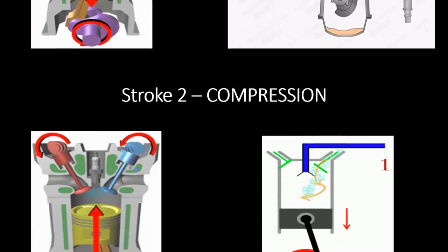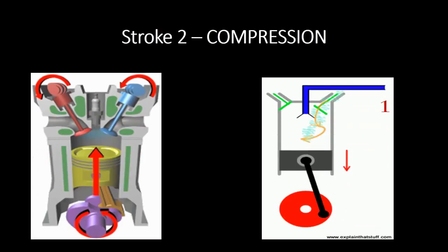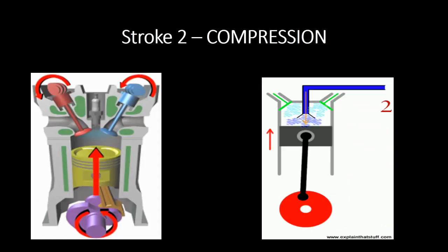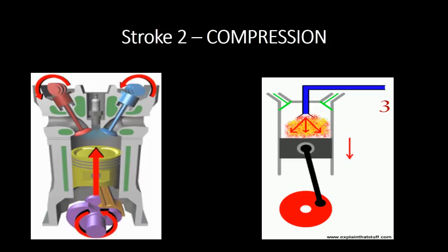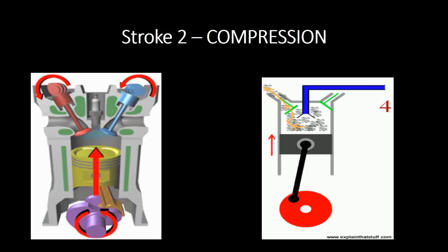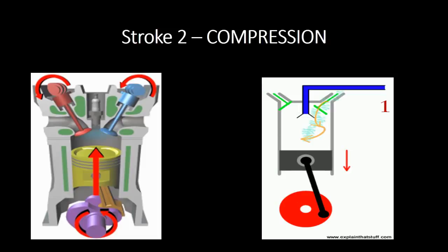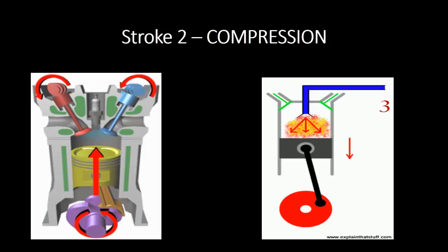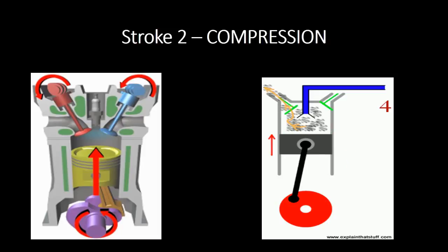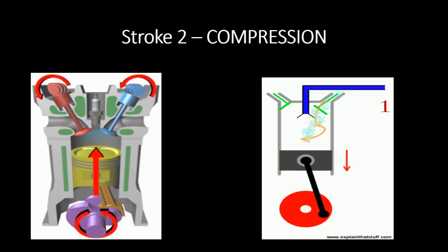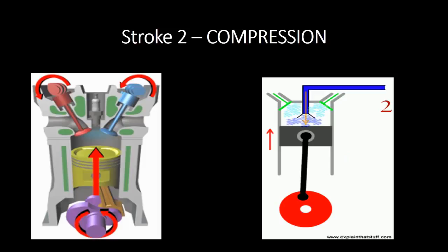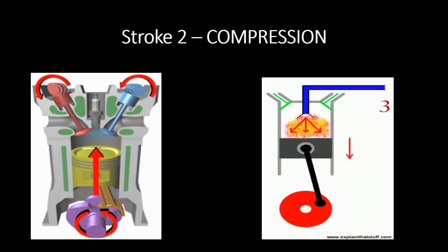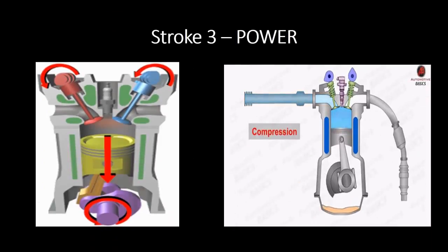The compression stroke starts with the piston at BDC after the intake stroke is finished. During this stroke, both intake and exhaust valves are closed and the piston moves towards TDC, compressing the air mixture to maximum pressure. Before the piston reaches TDC, in a gasoline engine the spark is generated, while in a diesel engine fuel is injected. During the compression stroke, the engine consumes energy, with the crankshaft rotating due to component inertia.